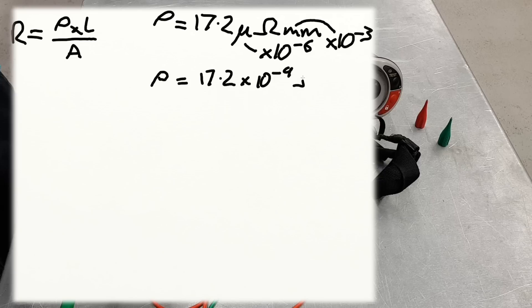That is now in the base unit of ohm metres. What we've effectively done is divided by a billion and turned it into a much smaller number. Notice though that 17.2 micro ohm millimetres and 17.2 times 10 to the minus 9 ohm metres represent exactly the same amount of resistivity — we've just expressed it in a slightly different way.